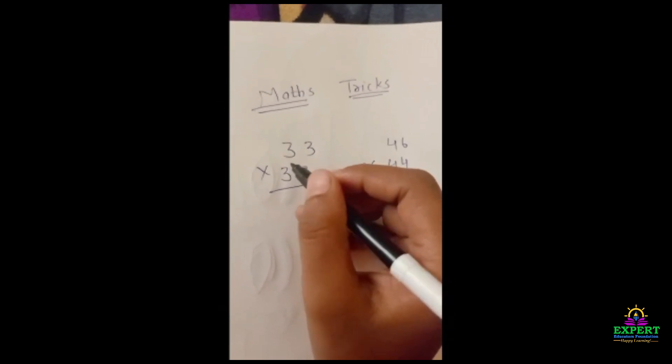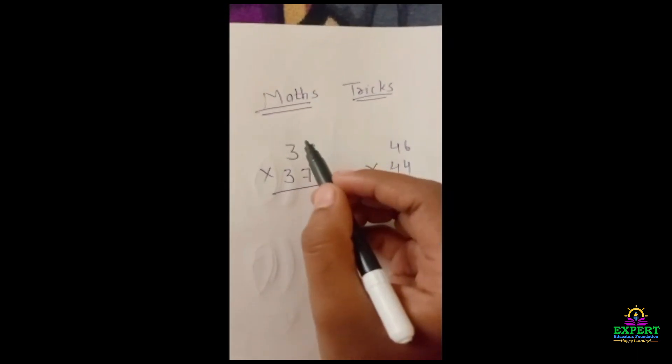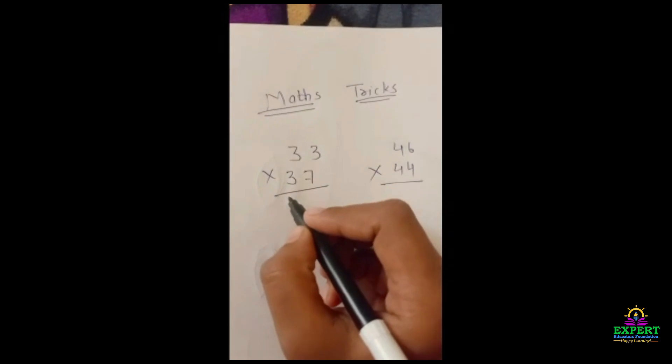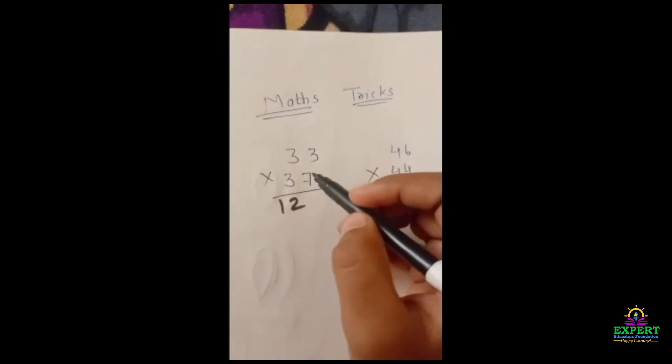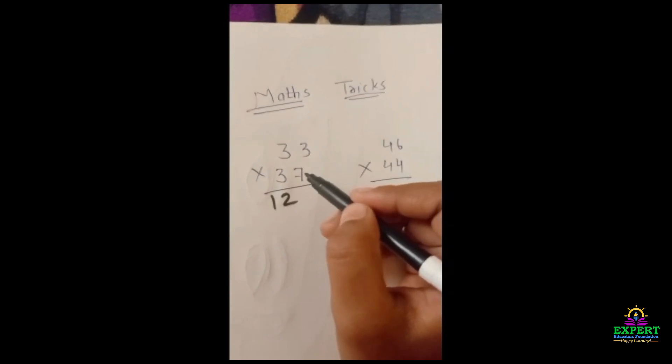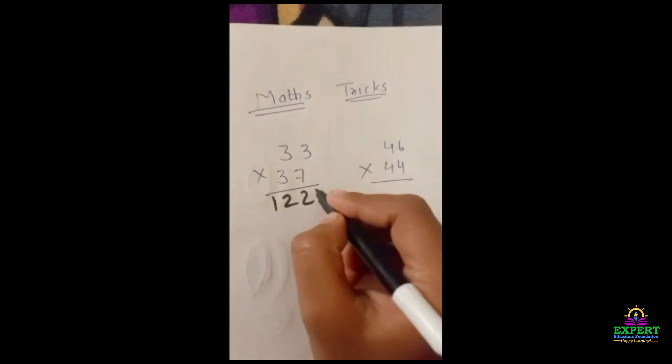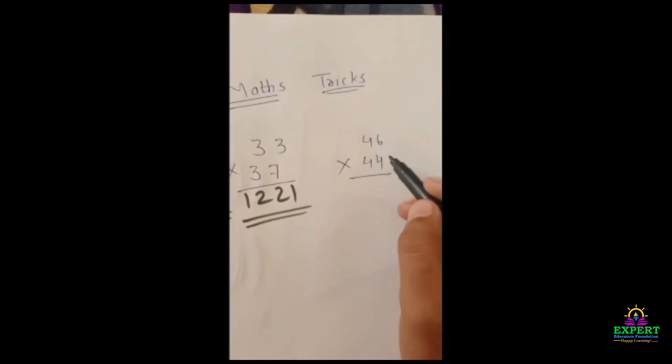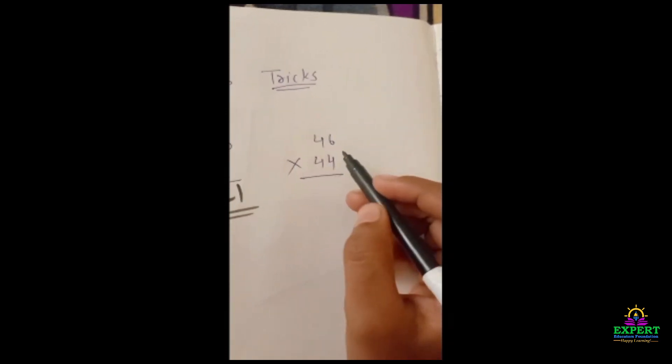So we will take here, after 3, what number is there? 4. So we will multiply 3 by 4. The result is 12, we will write here 12. Now we have to multiply 7 and 3. 7 threes are 21, so this is our answer.